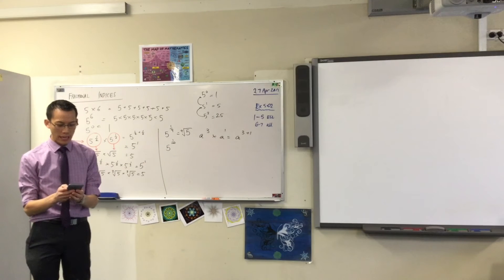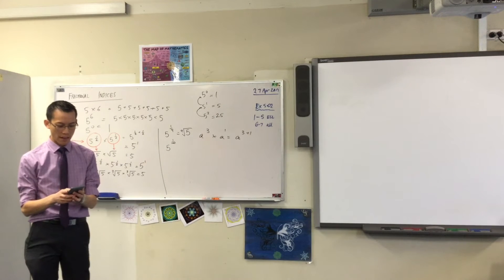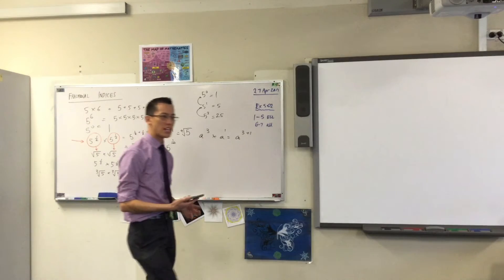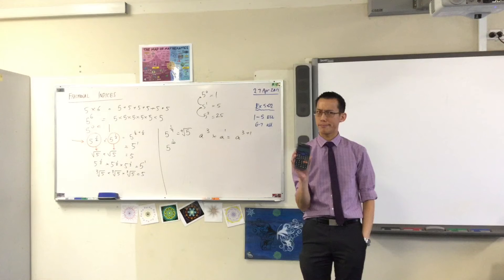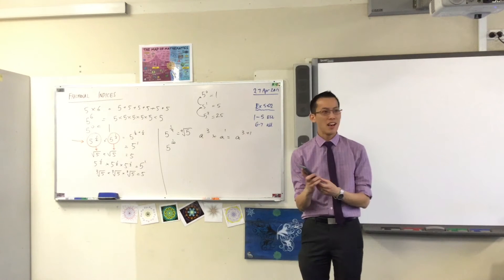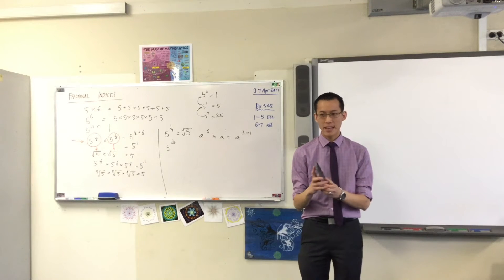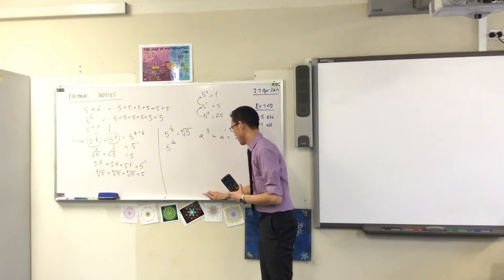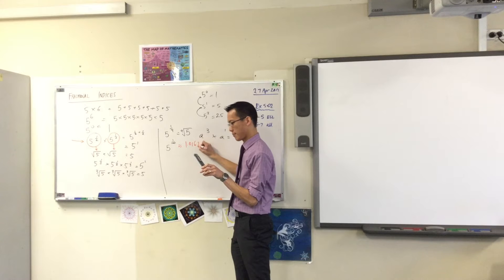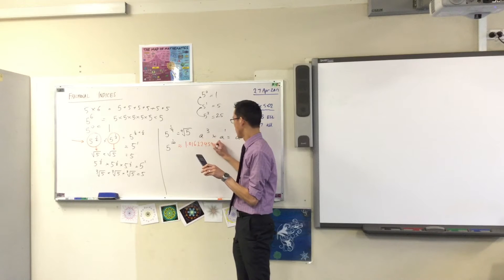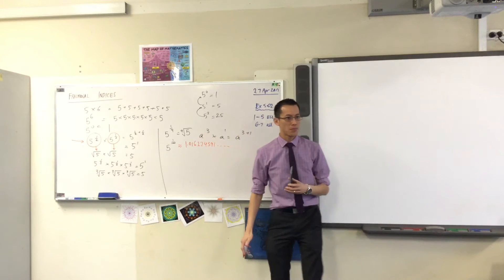Now, before you hit equals, I want you to make a prediction. What do you think it will be? 5, 6, 2, 1. Okay. So, I'm going to hit equals. And this is what my calculator tells me. Do you get the same thing?